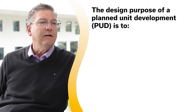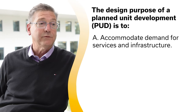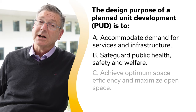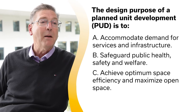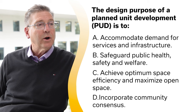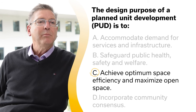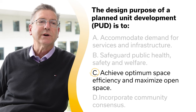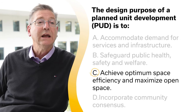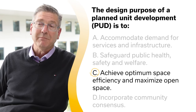The design purpose of a planned unit development, or PUD, is to: A, accommodate demand for services and infrastructure; B, safeguard public health, safety, and welfare; C, achieve optimum space efficiency and maximize open space; or D, incorporate community consensus. The correct answer is C, achieve optimum space efficiency and maximize open space. PUD zoning restricts use to development of whole tracts for residential, commercial, industrial, or any combination. In doing so, PUD's design purpose is to achieve optimum space efficiency and maximize open space.